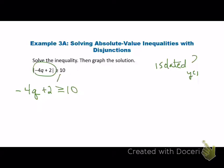And then our second split, the negative 4Q plus the 2 less than or equal to the negative. Okay, so this is the flip. When you introduce the negative, you get your flip. Now let's go back to the first one. Everybody see why we did the flip? Because we introduced that negative.